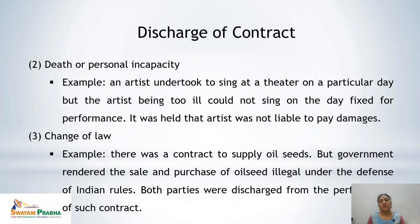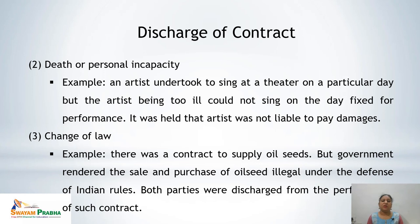Second cause of impossibility is death or personal incapacity. Where the person involved in the contract is deceased or has personal incapacity to perform the contract, it leads to discharge of contract. For example, an artist undertook to sing at a theatre on a particular day but was too ill to sing on the day fixed for performance. It was held that the artist was not liable to pay damages, as death or personal incapacity leads to discharge with no damages chargeable.